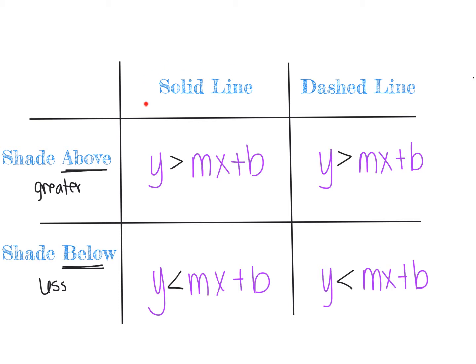For solid versus dashed lines: when we graphed inequalities on a number line, we used open or closed circles. A closed circle is similar to a solid line — the line is included, just like a closed circle meant the point was included. So greater than or equal to and less than or equal to produce solid lines, like when graphing y = mx + b with an equals sign.